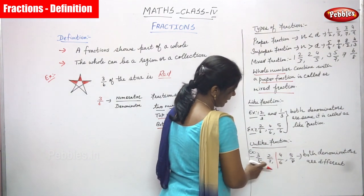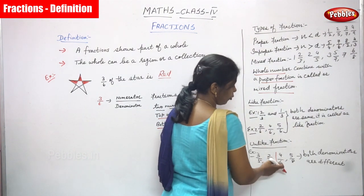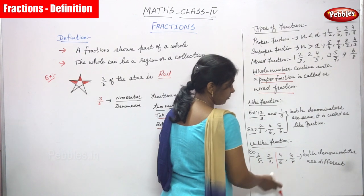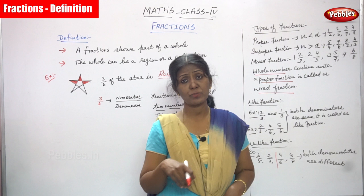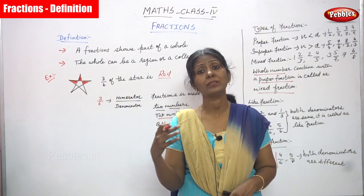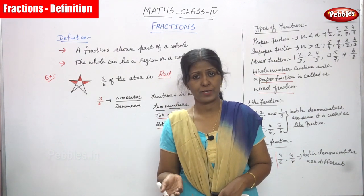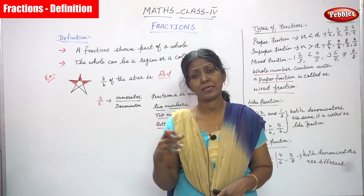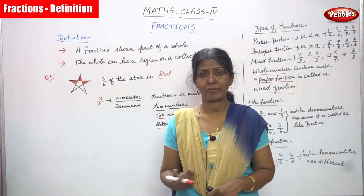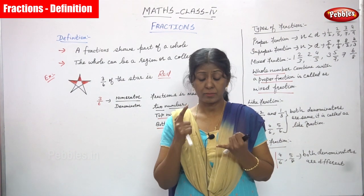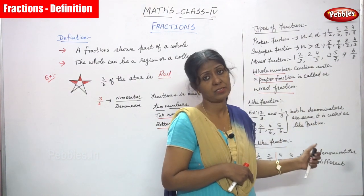Unlike fractions means the denominators are different. For example: 3 by 5 and 2 by 7 — the denominators 5 and 7 are different, so they are unlike fractions. Also 4 by 6 and 5 by 8 — the denominators 6 and 8 are different. So like fraction means denominators are the same; unlike fraction means all the denominators are different. These are the types of fractions: proper, improper, mixed, like, and unlike fraction.